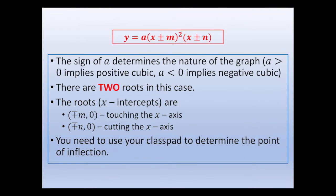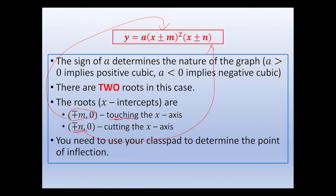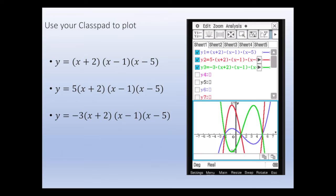The general two-root form is y equals a(x ± m)²(x ± n). The sign of a determines the nature of the graph — positive gives a positive cubic, negative gives a negative cubic. There are two roots: the root associated with the squared bracket, at (∓m, 0), touches the x-axis; and the root at (∓n, 0) cuts the x-axis. Use your class pad to determine the point of inflection.